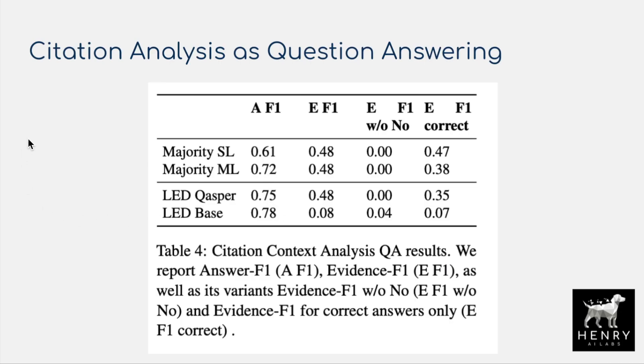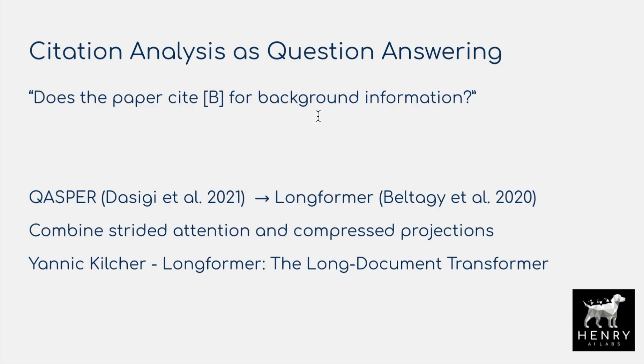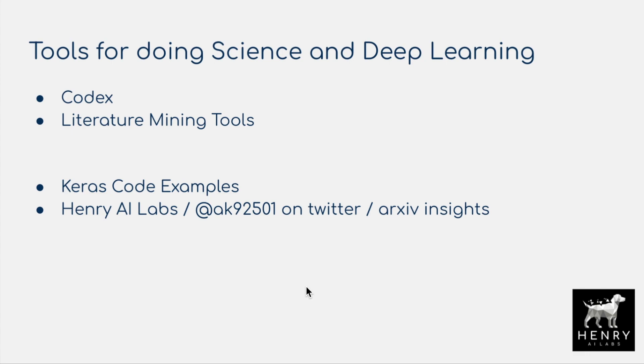Here are the results of applying this model to the task of saying yes or no: does this paper cite B for background information? Following advances in scientific literature mining has been one of my favorite topics in deep learning. I love seeing new advancements from researchers building platforms around Semantic Scholar. This idea of improving the tools we use to do science is really compelling — similar to MLOps for distributed training and continual learning, and things like Codex where models help us write code and quickly prototype ideas.